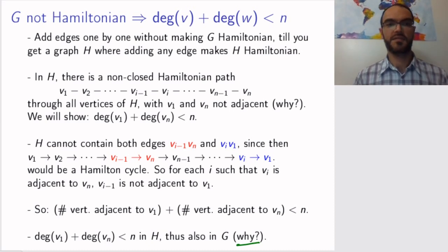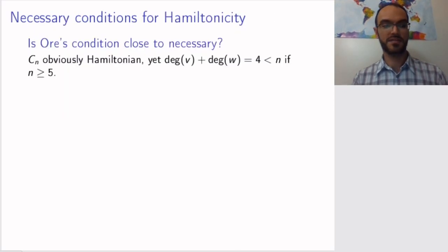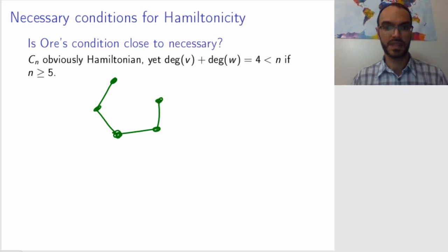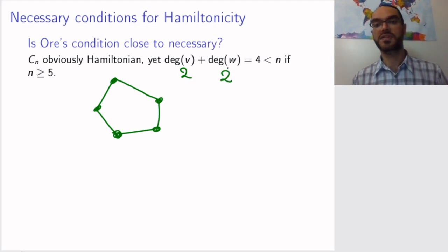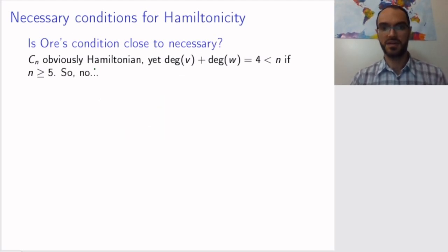Now that we have this sufficient condition, we can ask: is this condition at least close to being necessary? Will we be able to detect all Hamiltonian graphs with this condition? Well, as it turns out, no. This condition is quite far from being necessary. The probably most obvious Hamiltonian graph is the cycle graph, because then the cycle itself is a Hamiltonian cycle. In such a graph, any vertex has degree two. So when you sum up the degrees of two vertices, you get four, which is smaller than n if n is at least five. So cycle graphs do not satisfy Øre's condition, and still they are Hamiltonian.